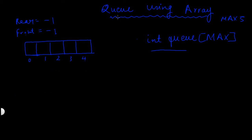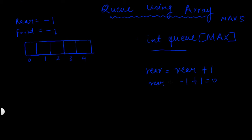When an element is inserted into the queue, the value of rear is incremented by 1: rear equals rear plus 1. The value of rear at this point is minus 1, so minus 1 plus 1 equals 0. Rear becomes equal to 0, and the new element is inserted at position 0.